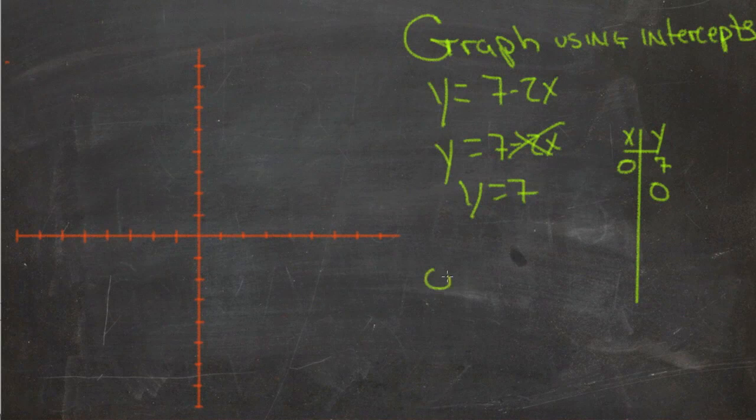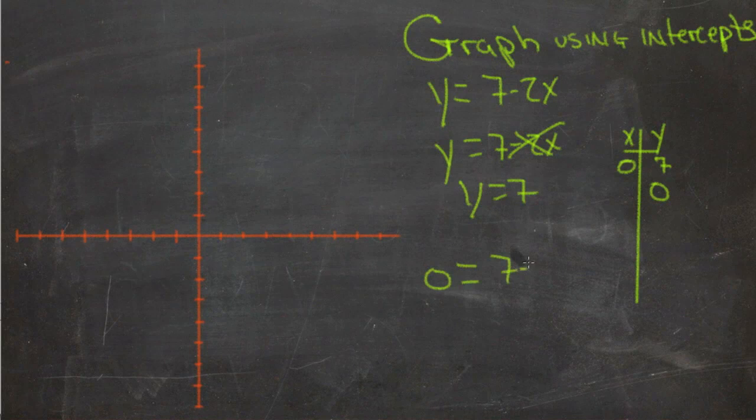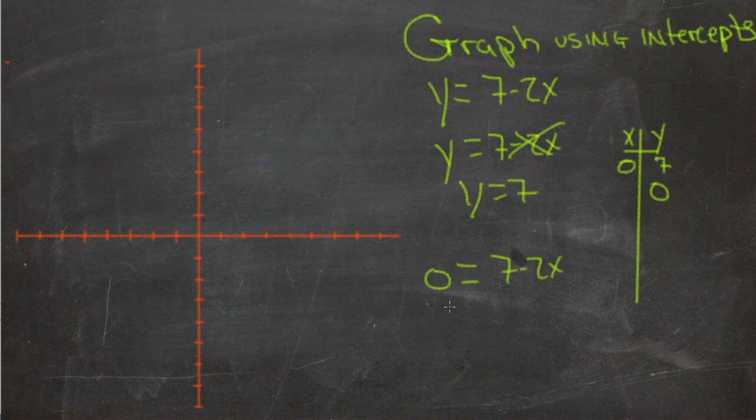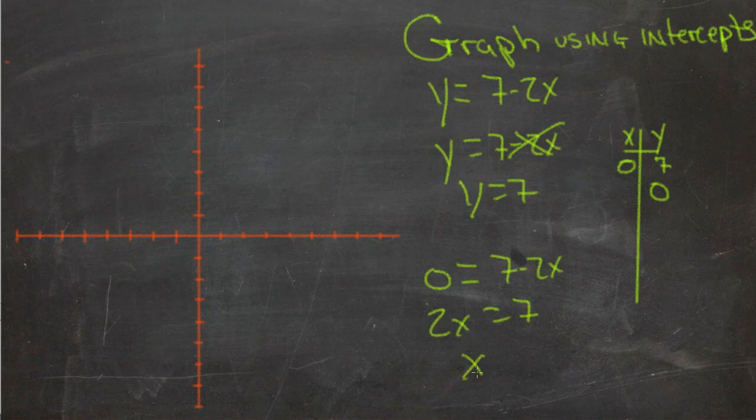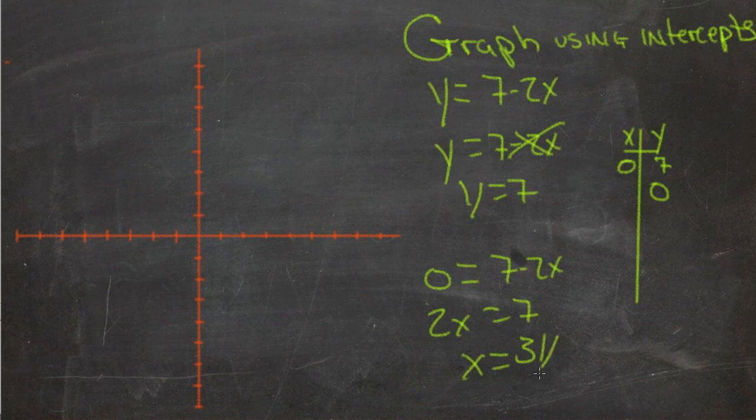When y is 0, we get 0 equals 7 minus 2x. Add 2x to both sides, so we get 2x equals 7, and x equals 3 and a half.